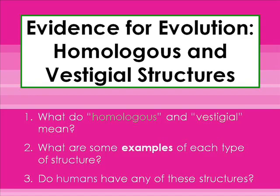These are the three questions I want you to be able to answer when you finish. Number one: what do homologous and vestigial mean? Number two: what are some examples of each type of structure? And number three: do humans have any of these structures?